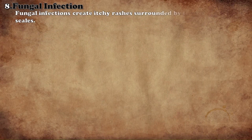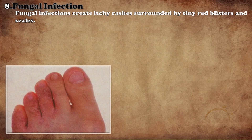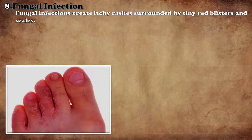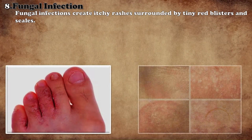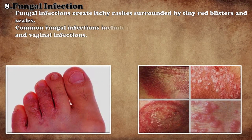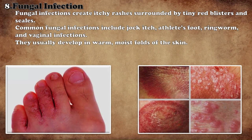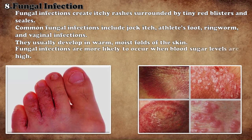Fungal infection forms a thin crust around the hard blister, on which there is itching. It can affect any part of the skin but most commonly affects the feet and genital tract. The risk of fungal infection is high in diabetic patients.